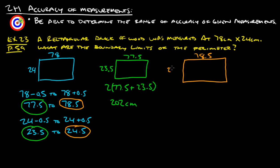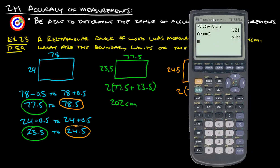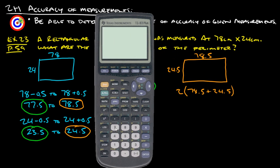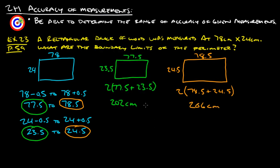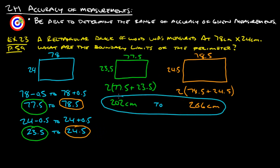Now for the largest possible perimeter, we have 78.5 by 24.5. We do the same thing: 2 times (78.5 + 24.5). That gives us 206 centimeters. So our answer is anywhere from 202 centimeters to 206 centimeters for the boundary limits of the perimeter.